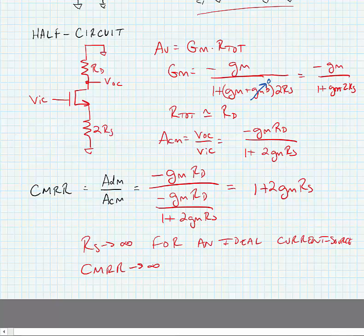So what we know about these source coupled pairs is that we would like to try and design them so that we bias them with a nearly ideal current source or a very high impedance current source in order to make sure that it amplifies differential signals well and rejects common mode signals.